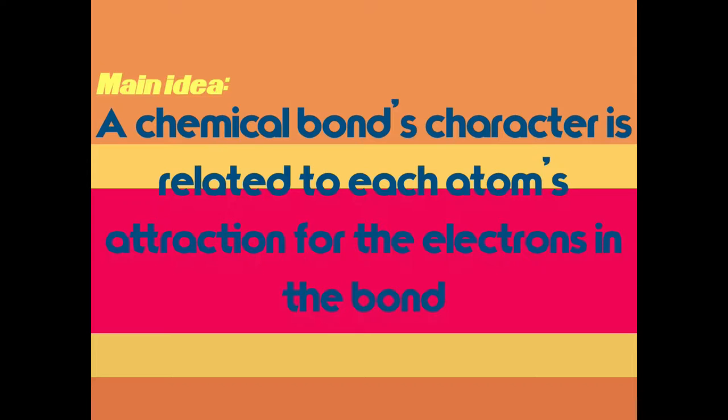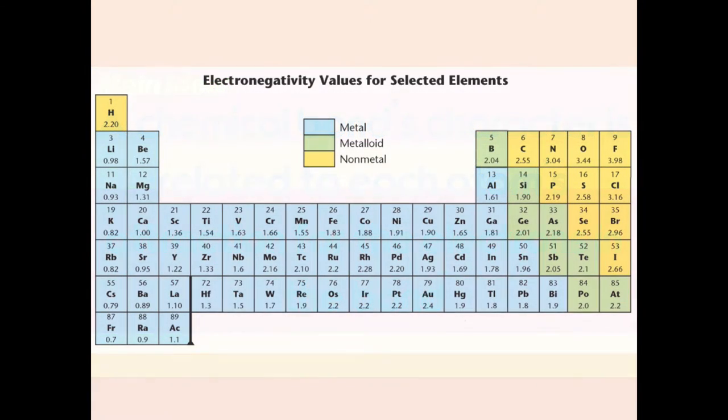And that may not mean much to you right now, but as we dive in, we'll clarify what that means. So polar and non-polar, in varying degrees. This chart you have in your textbook is an electronegativity value chart. This is the periodic table, and what this shows us is the amount of electronegativity each element has.